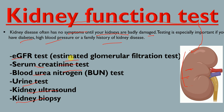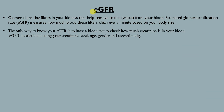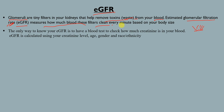Let's first start with eGFR, or estimated glomerular filtration rate. Glomeruli are the tiny filters present in your kidney that remove toxins or waste from your blood. Estimated glomerular filtration rate, or simply eGFR, is a rate measured per minute — it measures how much blood these filters can clean every minute, based on your body size.